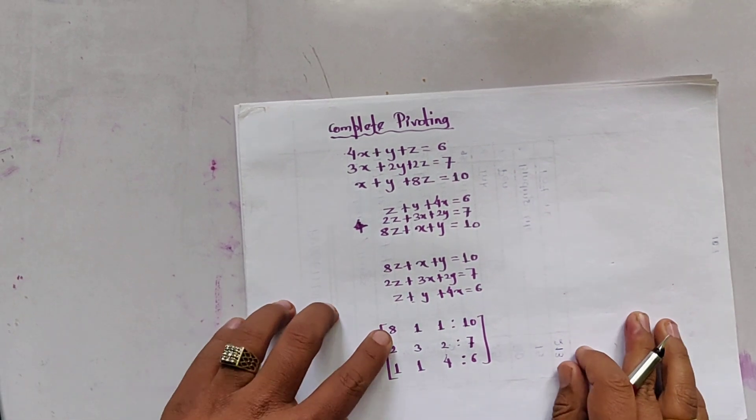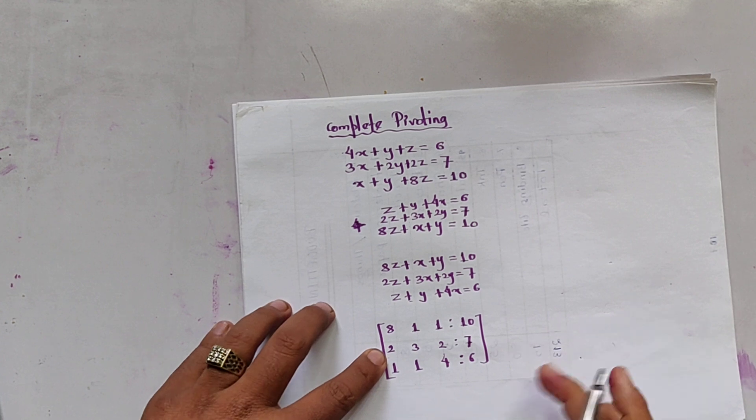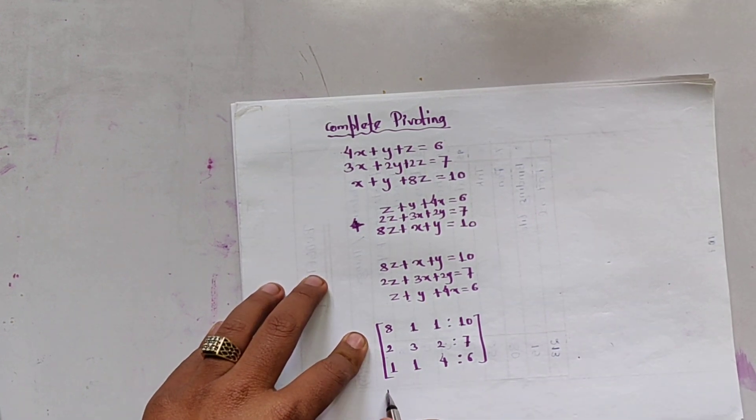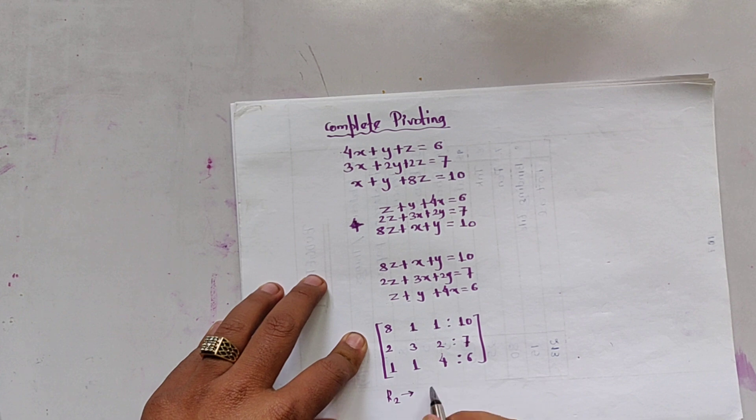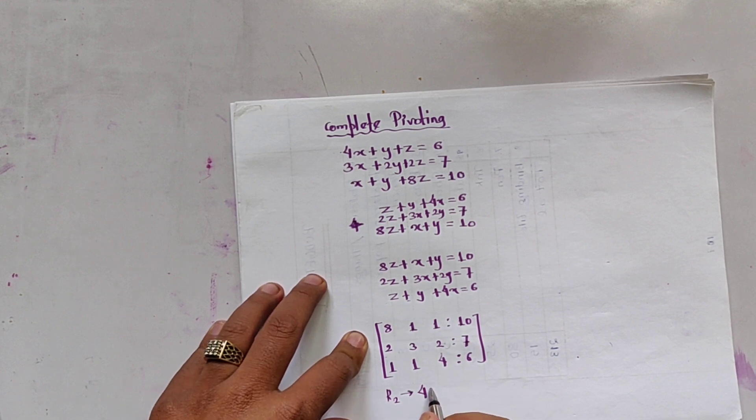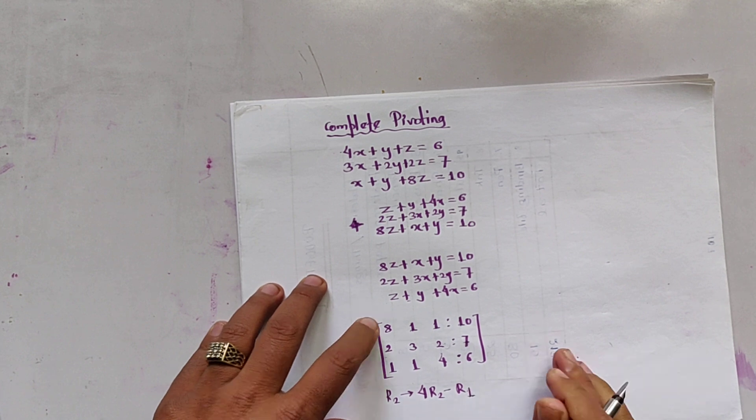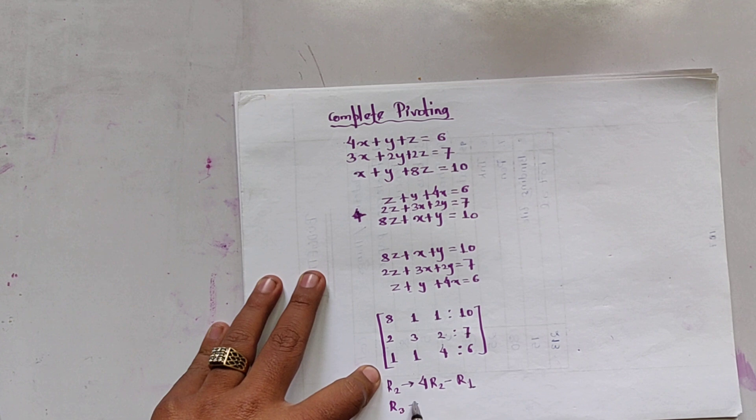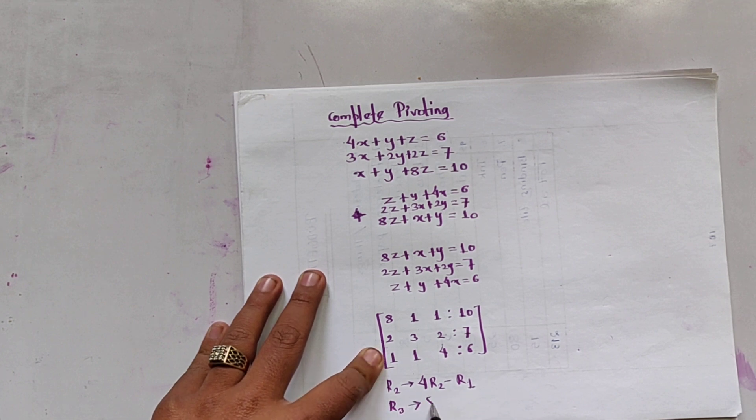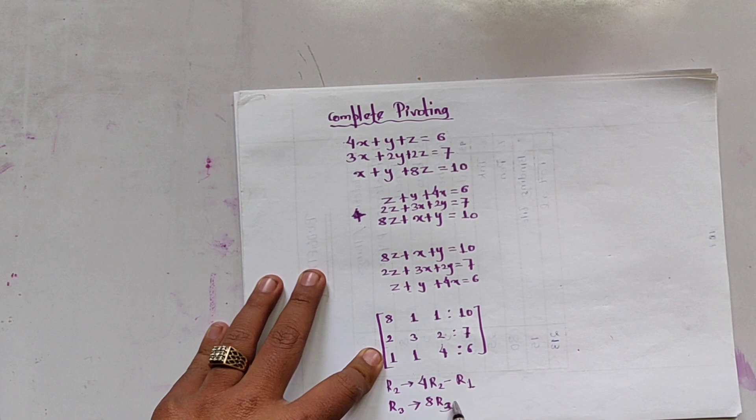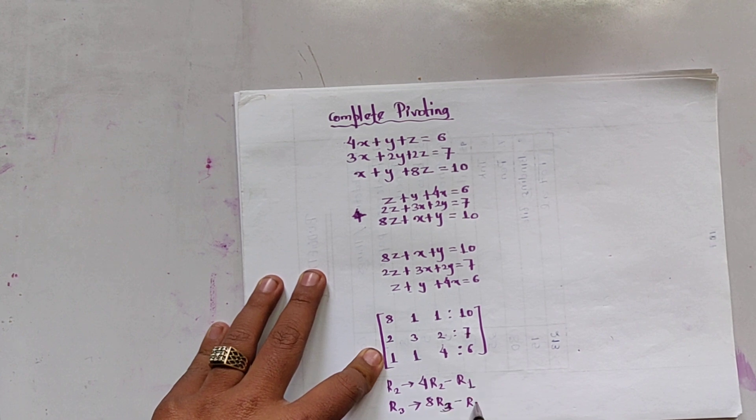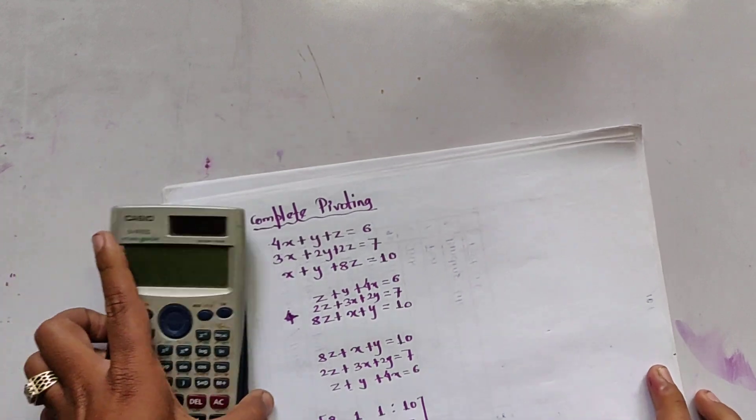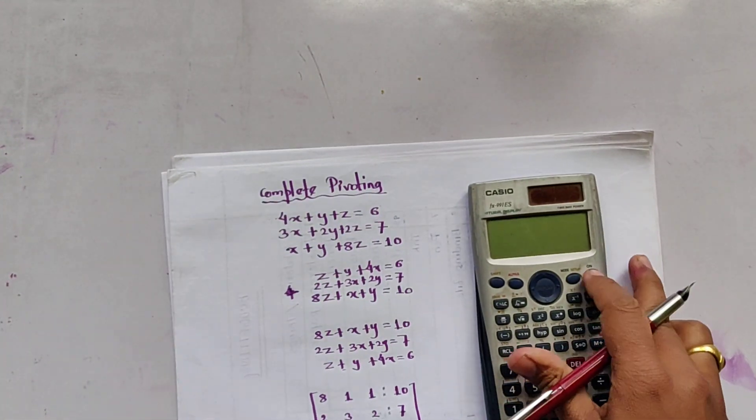For converting this 2 and 8, the LCM is 8. So we have to convert R2 by using 4 times R2 minus R1. For 8 and 1, the LCM is 8, so R3 is converted into 0 by multiplying it by 8 and subtracting it by R1. Let us use the calculator.